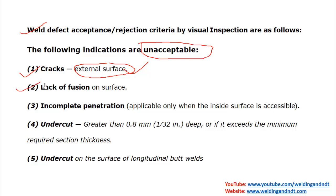Second: lack of fusion on the surface — also known as lack of sidewall fusion — is unacceptable. Third: incomplete penetration is also rejected. If you have access from the inside of the pipe you can observe penetration, and if it is incomplete that will be rejected. These three defects are straightforward rejections.